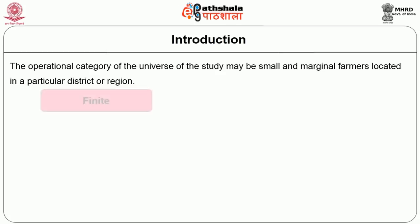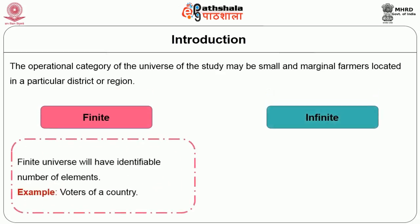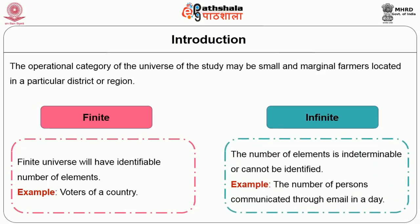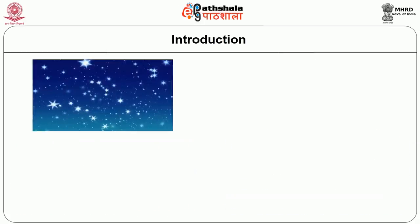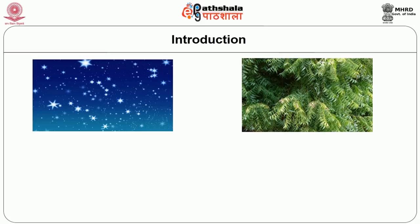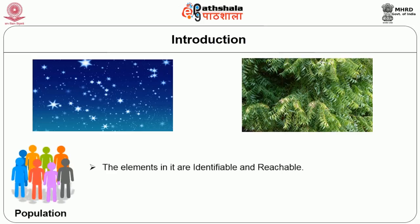Universe can be either finite or infinite. A finite universe will have an identifiable number of elements — for example, voters of a country. In the case of an infinite universe, the number of elements is indeterminable or cannot be identified — for example, the number of persons who communicated through email in a day, which is similar to counting stars in the sky. When it comes to population, the elements are identifiable and reachable. In most cases, the term population refers to a specific geographic area, and the sampling frame is prepared considering the population of the study.